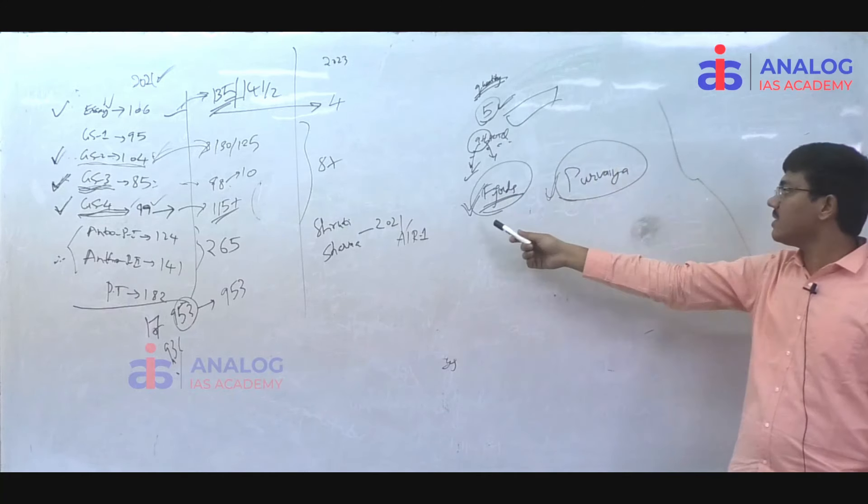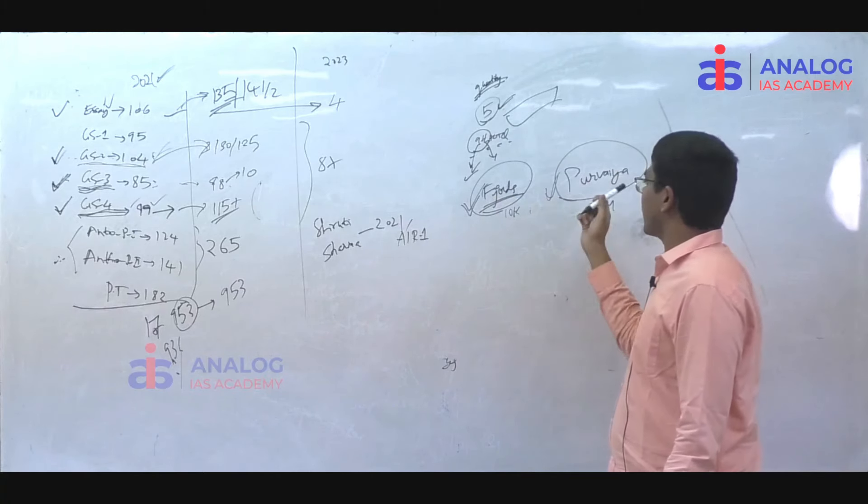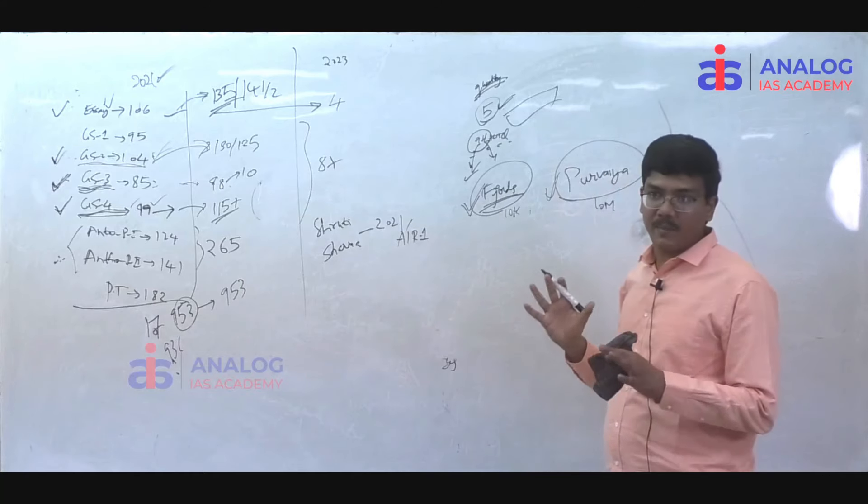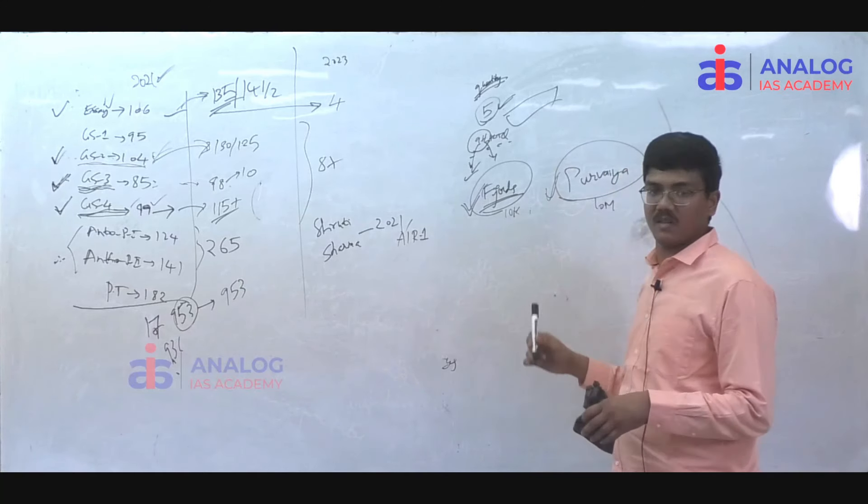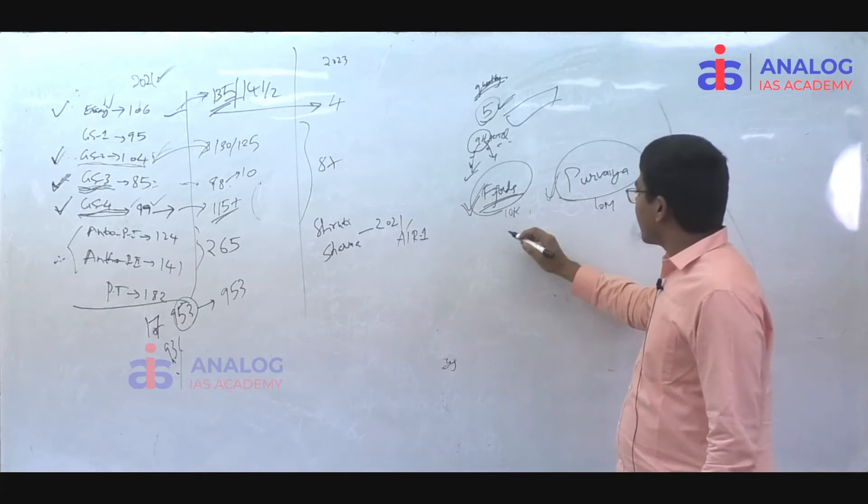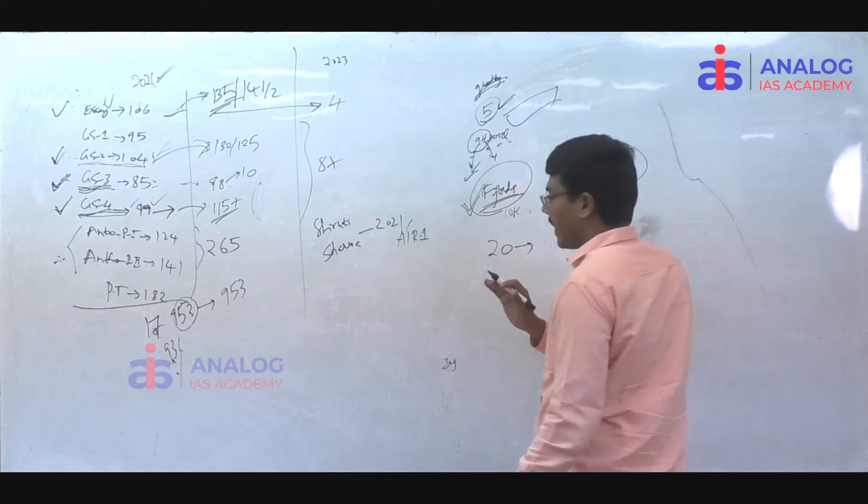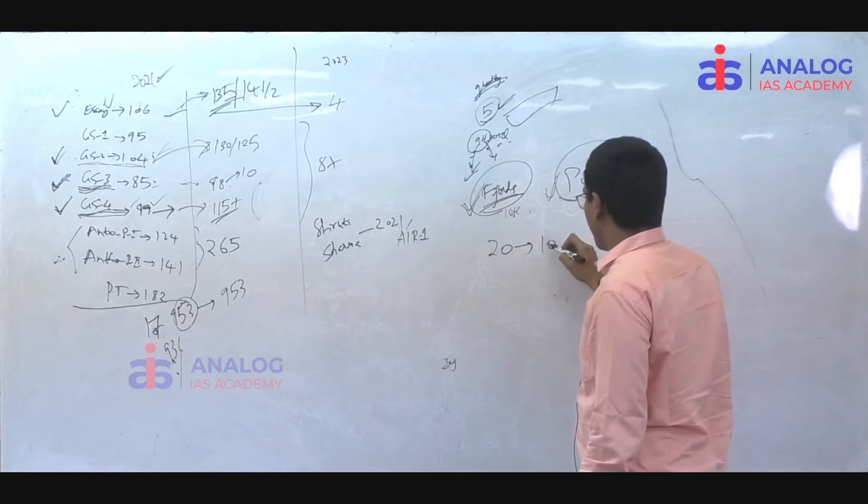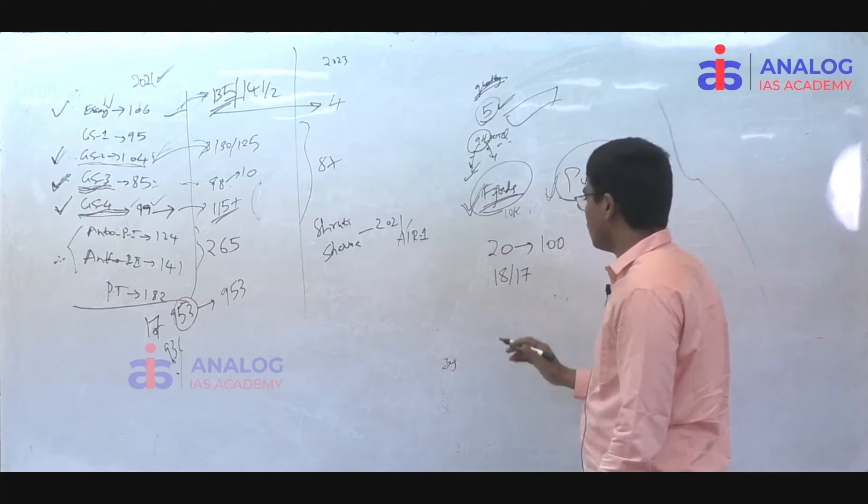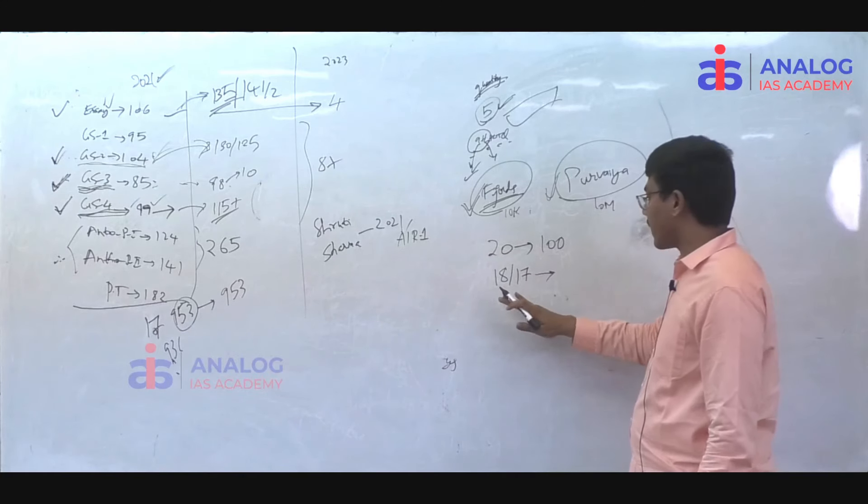Why I am speaking about quantity is, this is a 10 marker question. There were some people who gambled with them. If you don't know it, they thought they would compensate with quality. That is the biggest mistake you can ever do. There is one strategy. You will write only 18 or 17 questions. You will write with very good quality. Sometimes it works.